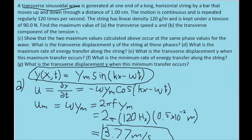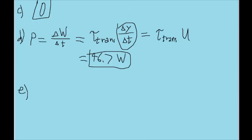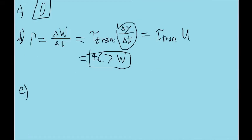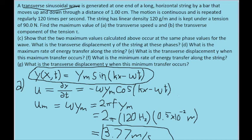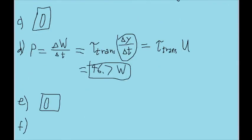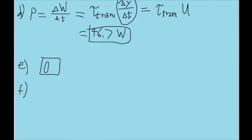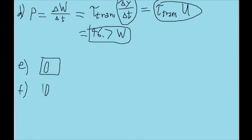Part E asks for the transverse displacement y when maximum power occurs. The maximum happens at the values found in parts A and B, and as established in part C, the y displacement for both is zero. Part F asks for the minimum power: we know that tension and speed both have points where they're zero, so at either of those points the power becomes zero. The minimum value for power is zero.